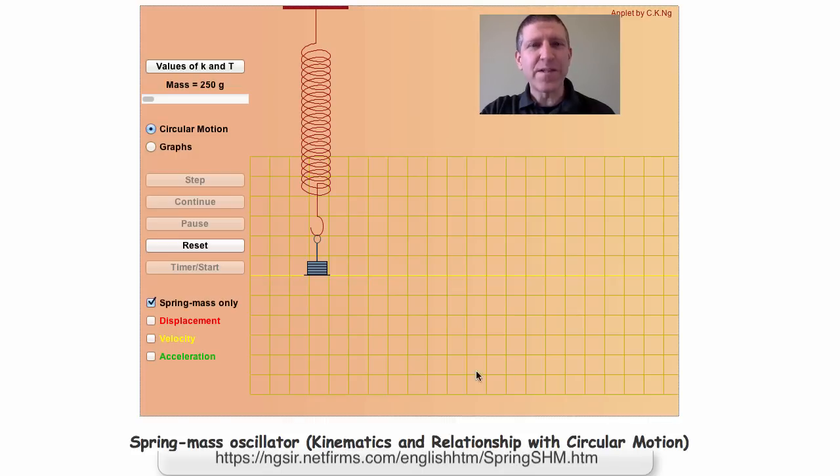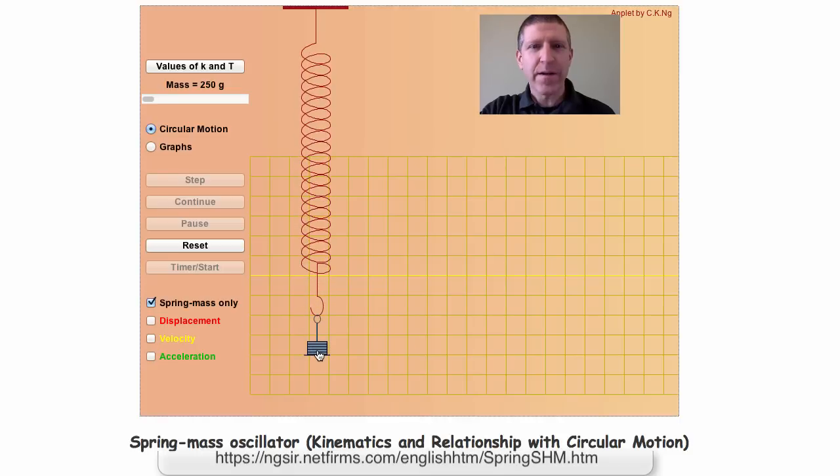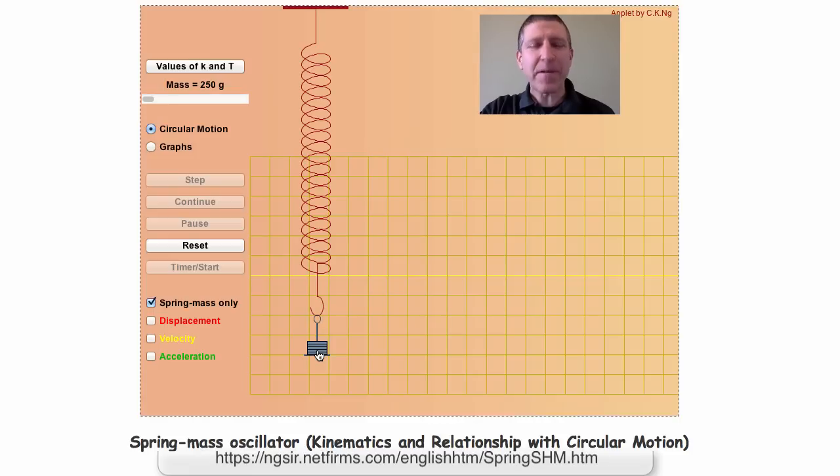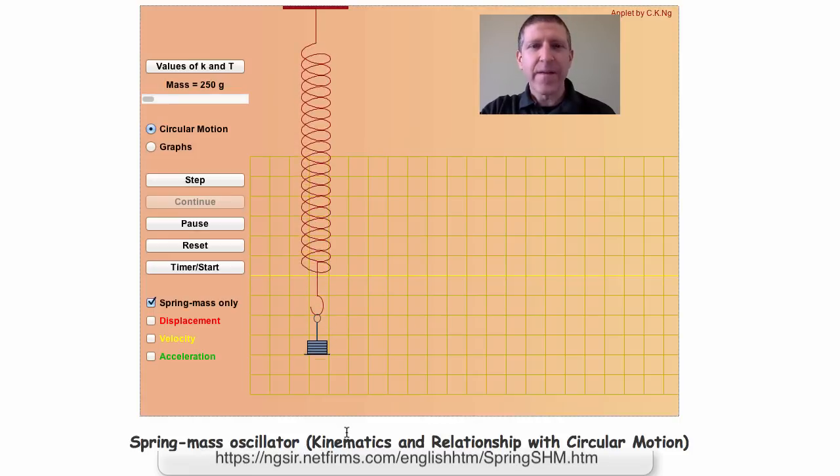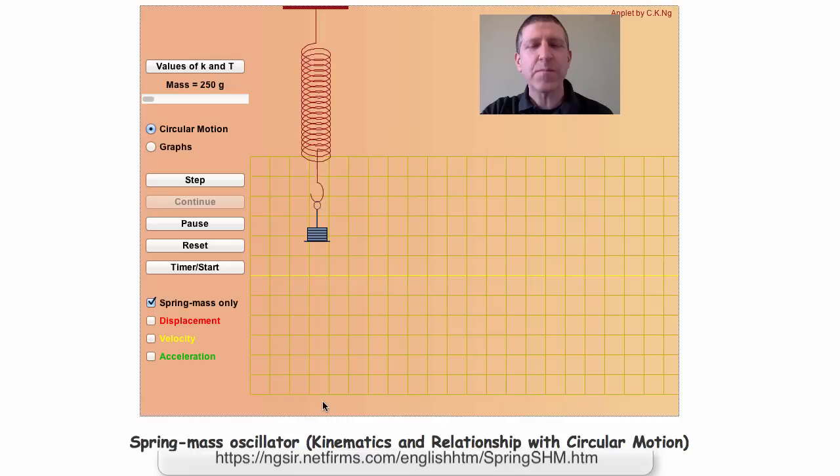Here is an example of simple harmonic motion. I'm going to pull this weight down, and it's on a spring. So the first thing you've got to notice is that there's a force that's opposite to the displacement. Notice that when it's down here, the force is up. When it's up here, the force is down because the spring is compressed.